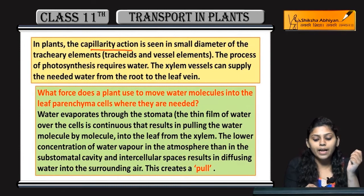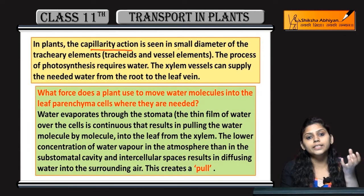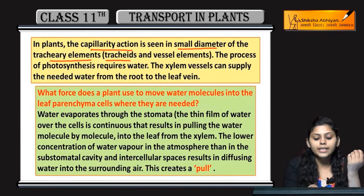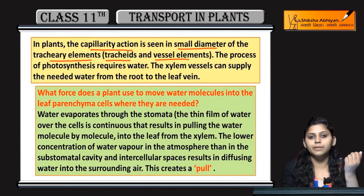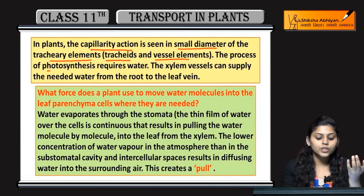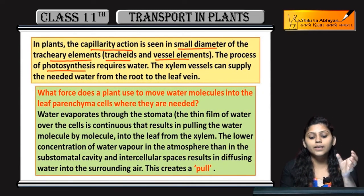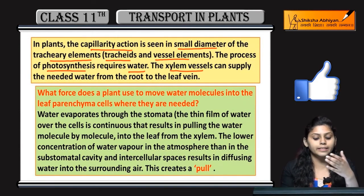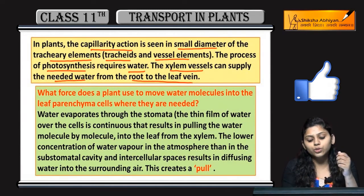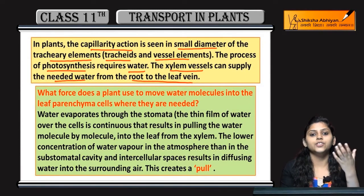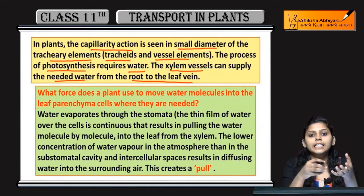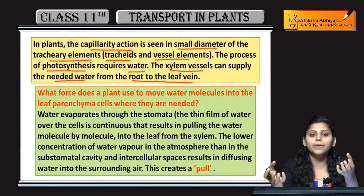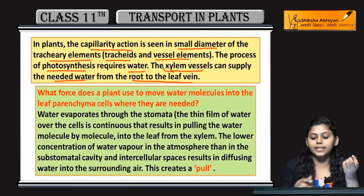Plants में capillarity action होता है, that is seen in small diameters of tracery elements — tracheids and vessel elements of xylem. जो process of photosynthesis है, that requires water. Xylem vessels supply करते हैं needed water from roots to the leaf vein. जहाँ पे भी water required है, leaf की veins में, वहाँ पे xylem water provide करता है.